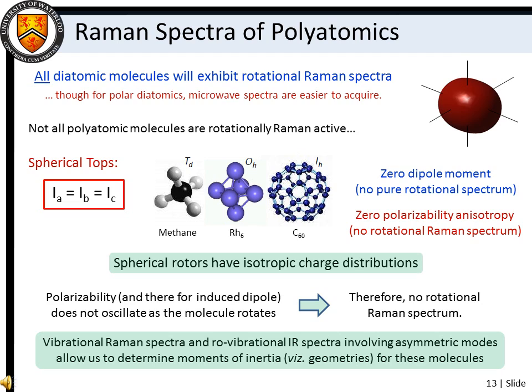As a consequence of their anisotropic polarizabilities, all diatomic molecules are rotationally Raman active, but this is not true of all polyatomic molecules. Spherical top species, such as methane, have isotropic charge distributions, and therefore zero polarizability anisotropy, so they don't exhibit rotational Raman spectra.